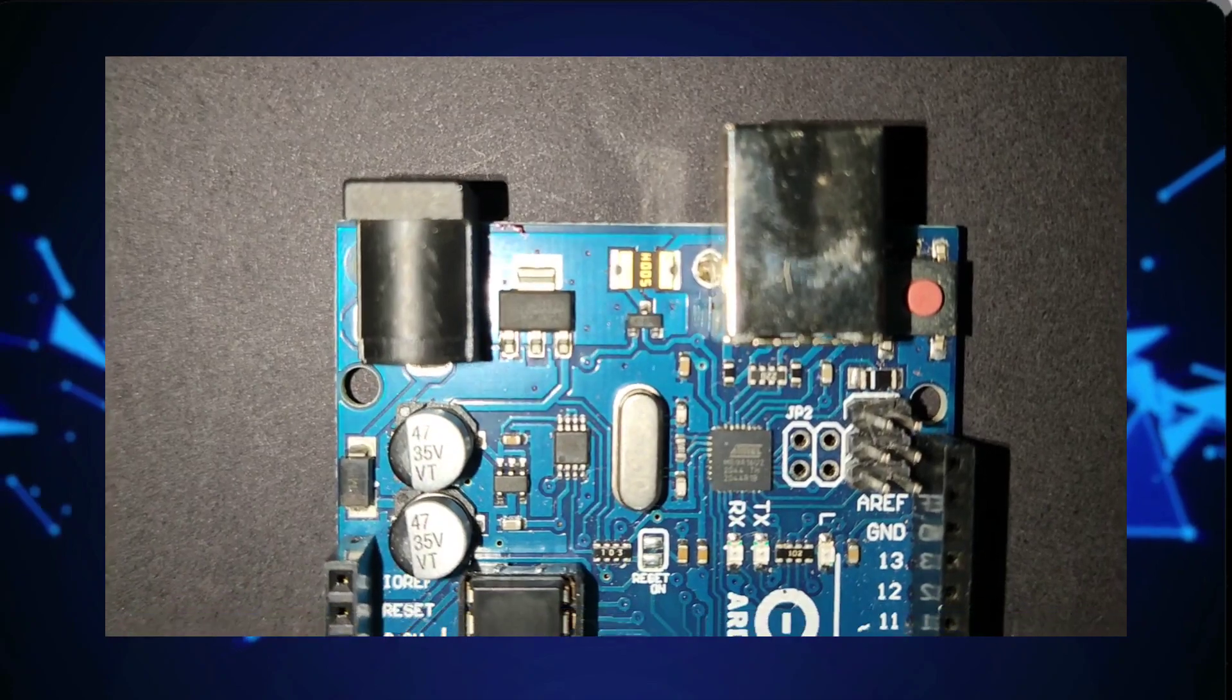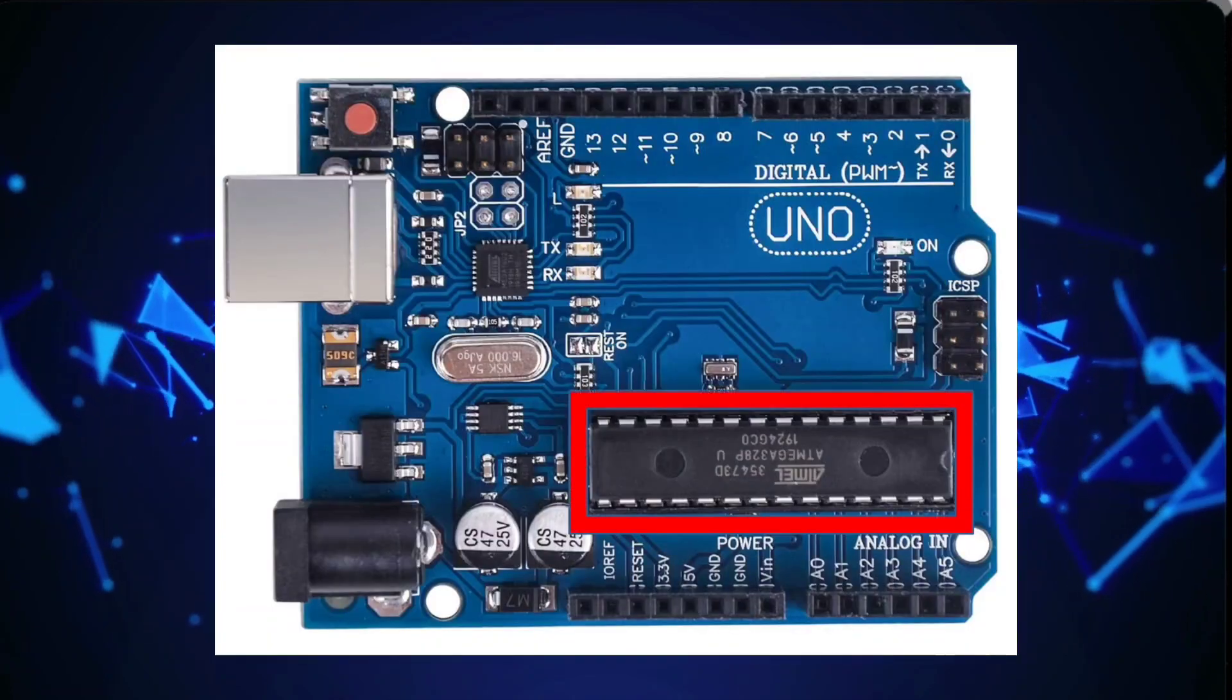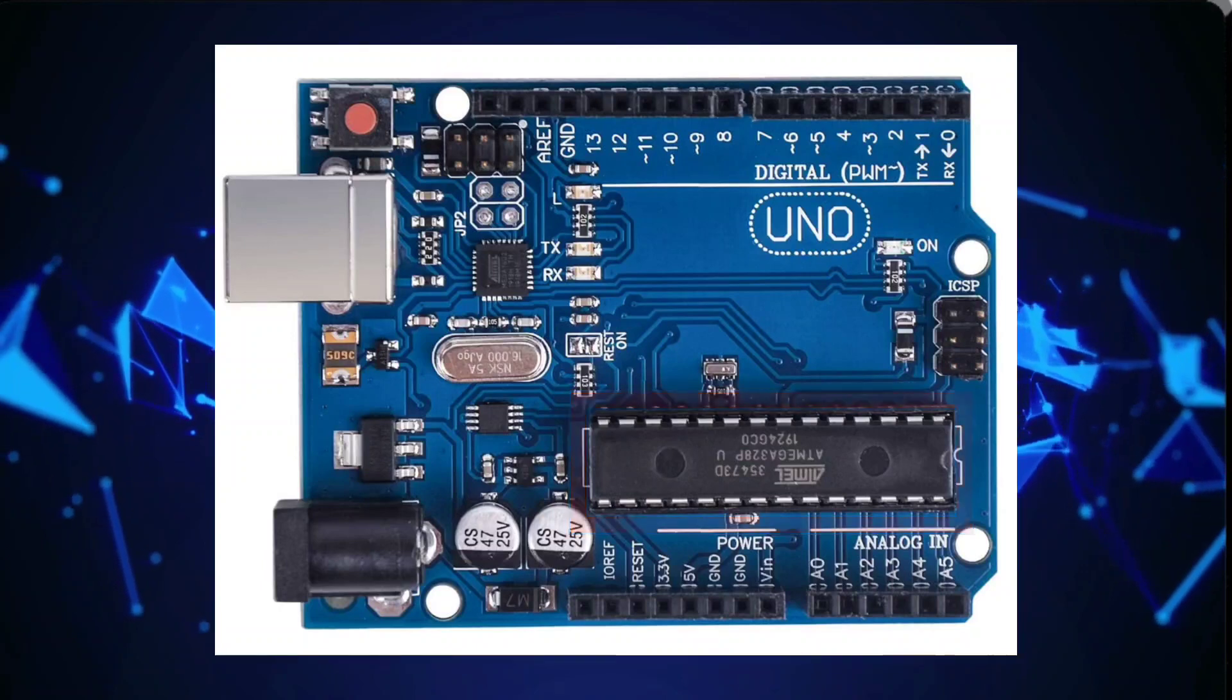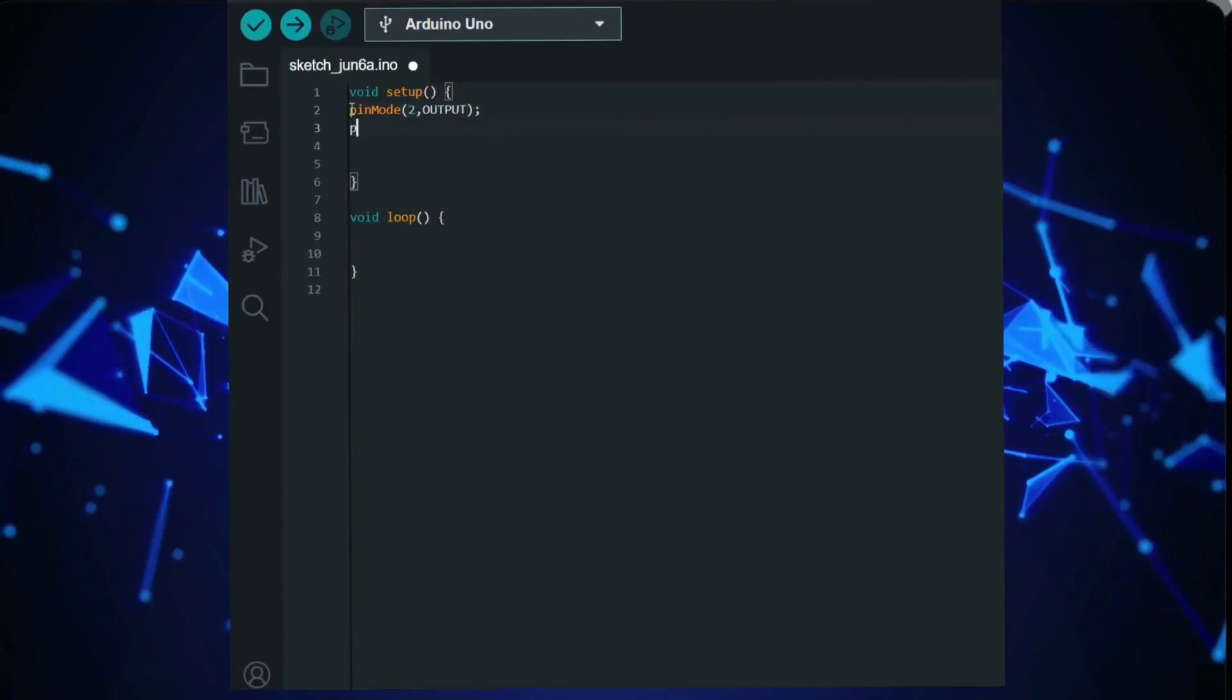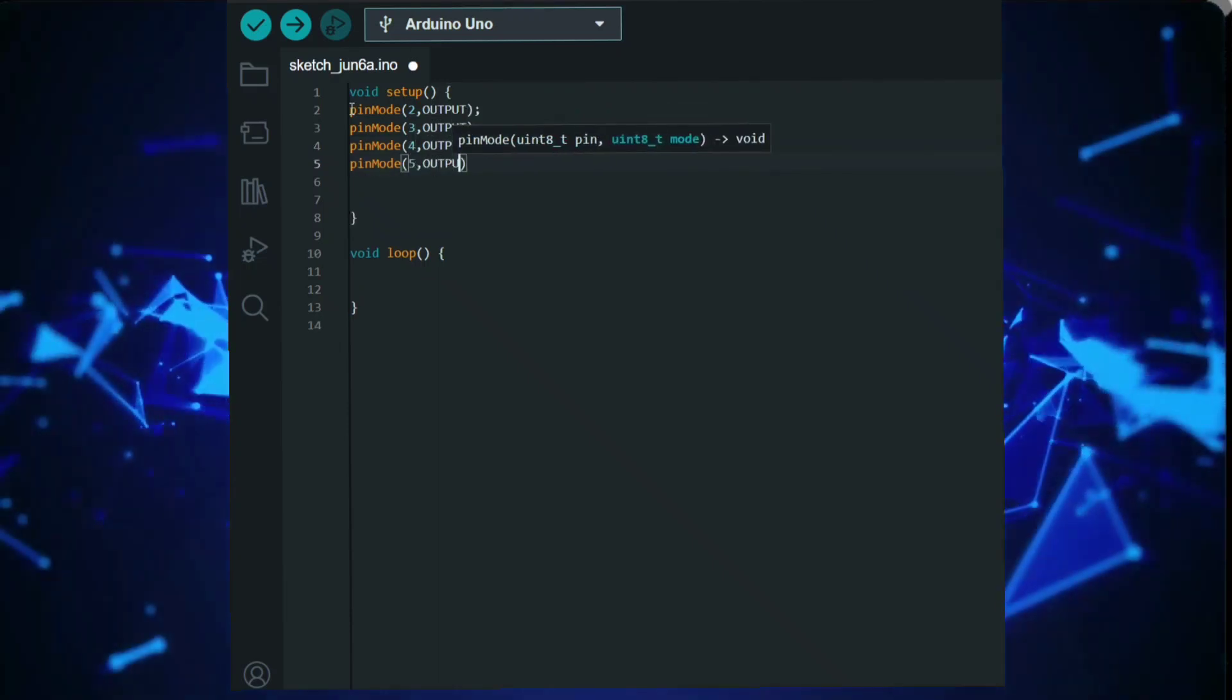Arduino Uno is the most popular and widely used board in the Arduino family. Arduino Uno is built around the ATmega328P microcontroller. It provides a balance between performance and power efficiency for a wide range of projects.